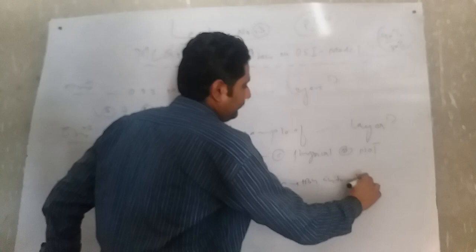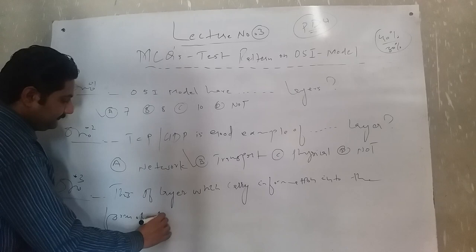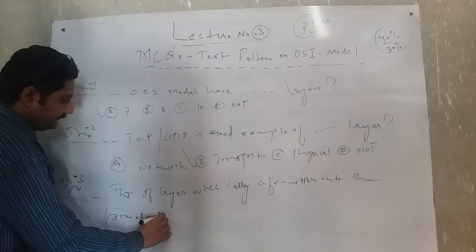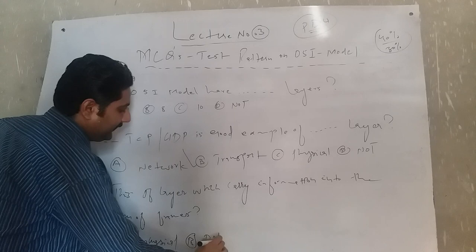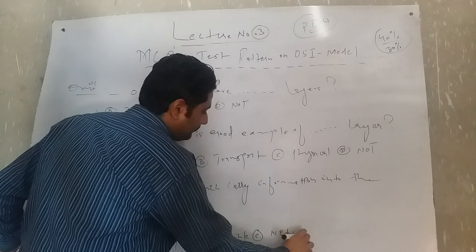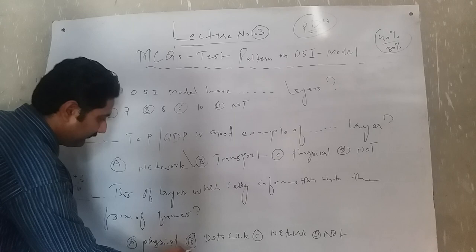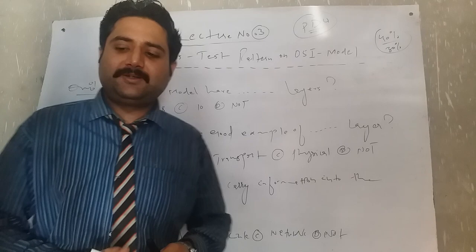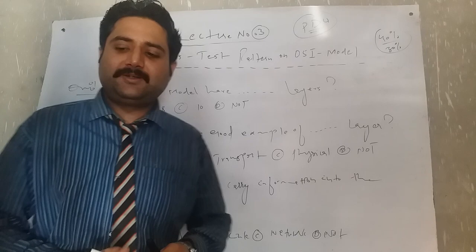Question number three: which layer of the OSI model carries information in the form of frames? Option A: Physical, Option B: Data Link layer, Option C: Network, Option D: None of them. The correct option is the Data Link layer, because the Data Link layer carries information in the form of frames.